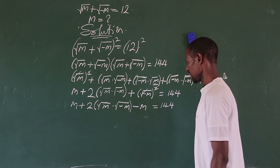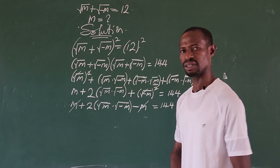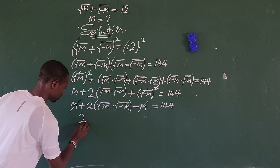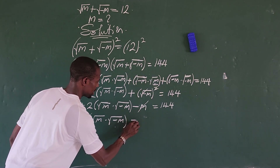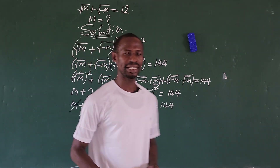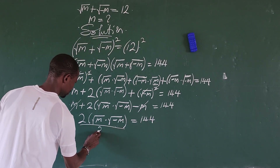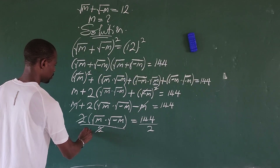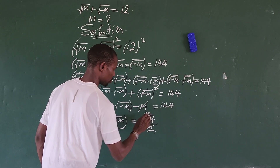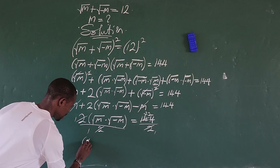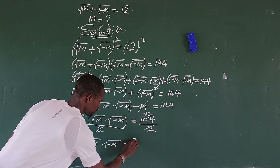We are now left with 2 times the square root of m times the square root of minus m, equals 144. We eliminate the 2 by dividing through by 2. So we get: square root of m times the square root of minus m equals 72.